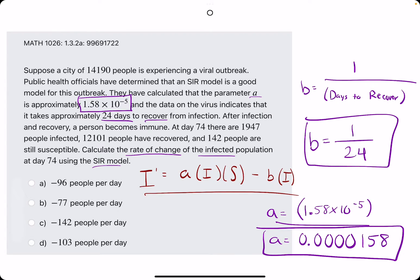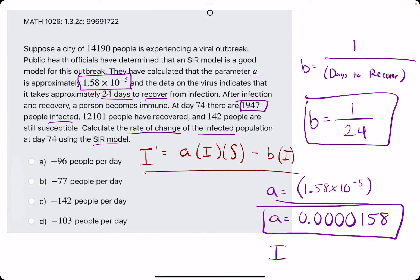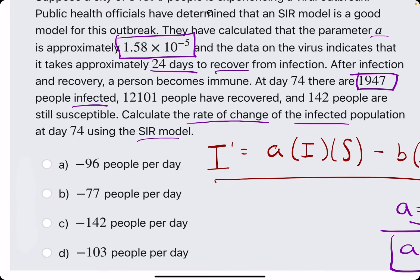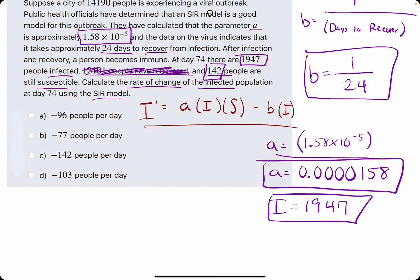And then the I and the S come directly from this sentence here. They say there are 1,947 infected, so our I is 1,947, while our S is—well, they say 12,000 have been recovered, that's not what we're looking for. We're not looking for R. They say 142 are still susceptible, so S is susceptible, and S is equal to 142.